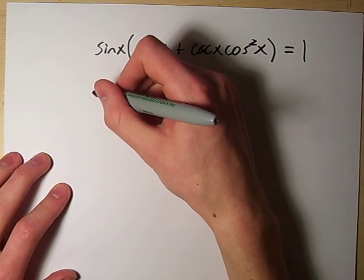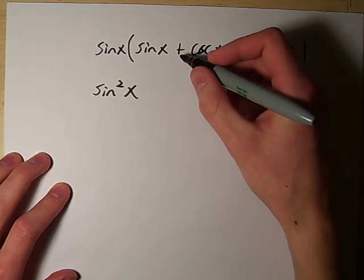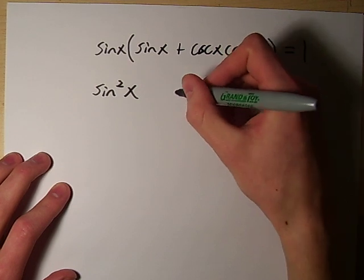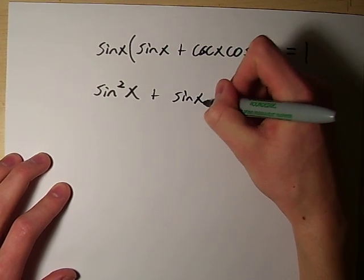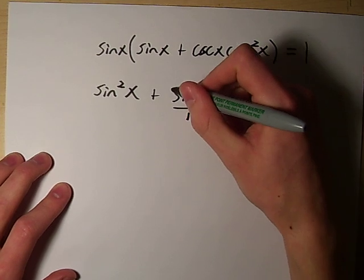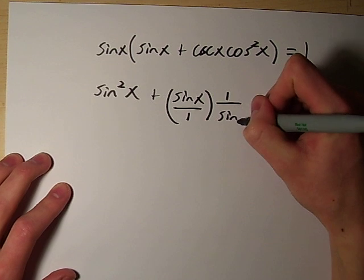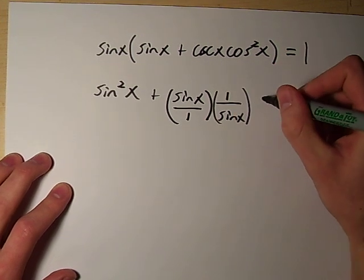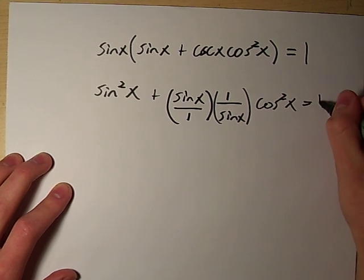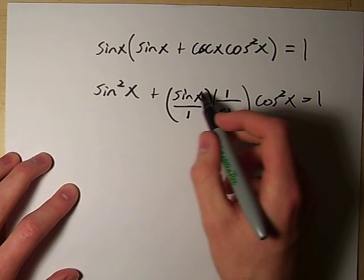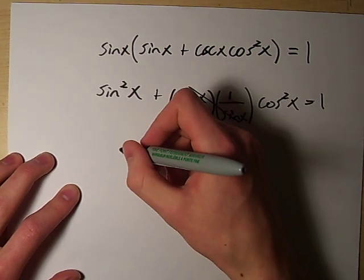So sine x times sine x is going to be sine squared x and then we're going to have plus sine x times 1 over sine x times cosine squared x equals 1.